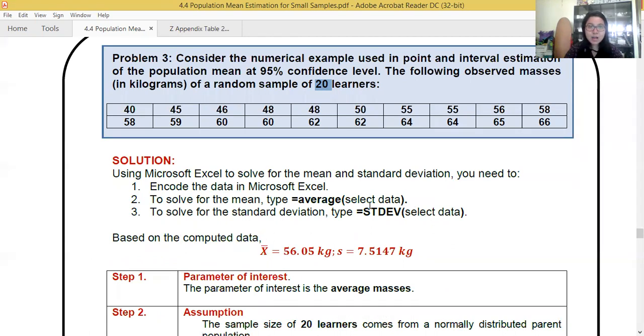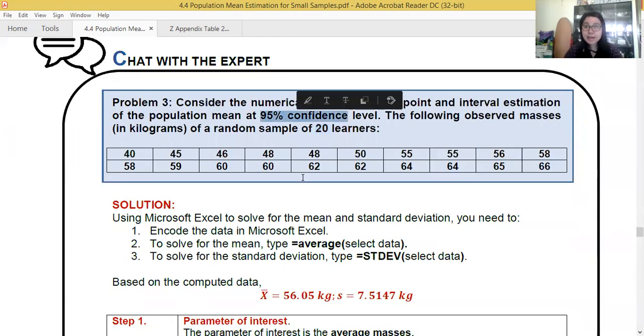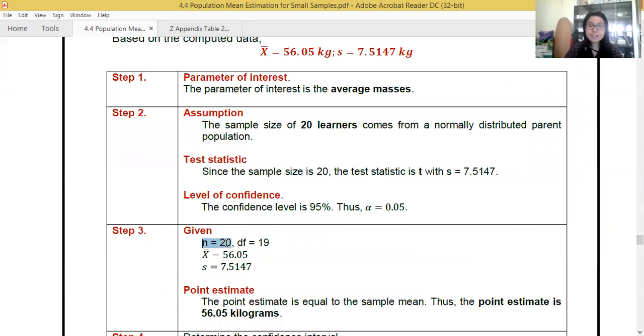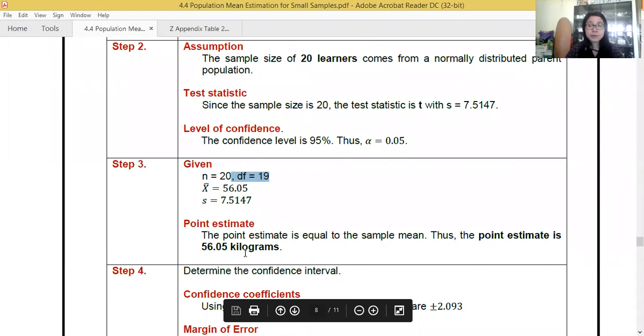Next, our confidence level. That's 95%. So our alpha, or our level of significance, is 0.05. For our given, our n is 20. So our degree of freedom is 19. That's n minus 1. Then our sample mean is 56.05. And our standard deviation is 7.5147. Since our point estimate is equal to our sample mean, so our point estimate is also 56.05 kilograms. Next,